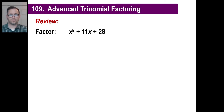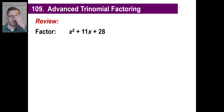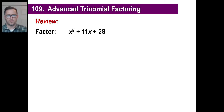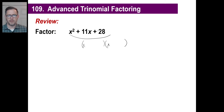Hey y'all, let's take a look at advanced trinomial factoring. We've done these before — this is just a slight variation with a trick we're going to learn today. Write the steps down and refer back to your notes. Remember these trinomials? You factor them by looking for two binomials: x and x. What two numbers add to give you 11 and multiply to give you 28? The answer is 7 and 4.